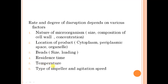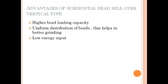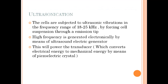Residence time — how long cells remain in the system until all are broken apart — must be considered. Temperature matters because cells are sensitive, and if temperature is not maintained properly the product quality can be affected. The type of impeller and agitation speed also play a role; for more rigid cells like plant cells, the agitation speed will be much higher. Regarding advantages of the horizontal bead mill over the vertical type: the horizontal system has higher bead loading capacity, uniform distribution of beads, and requires lower energy.